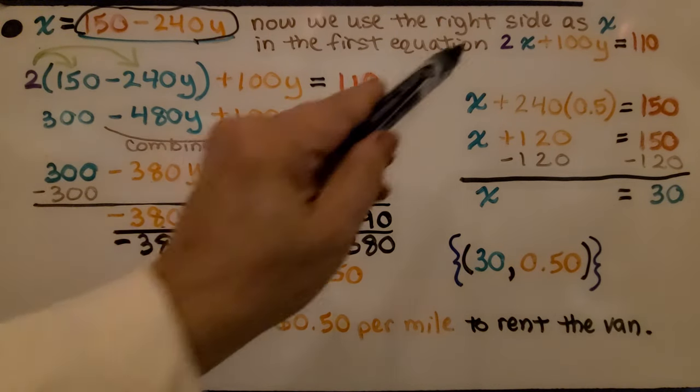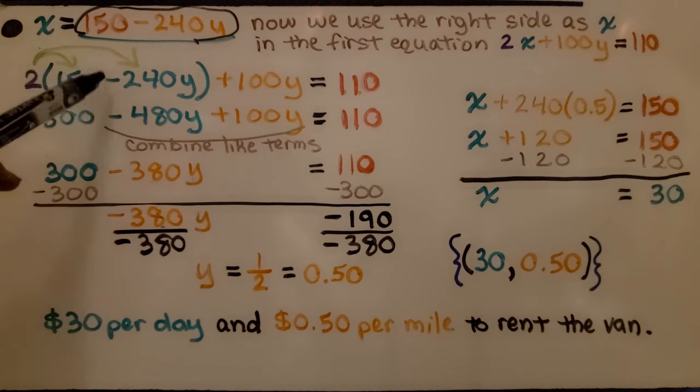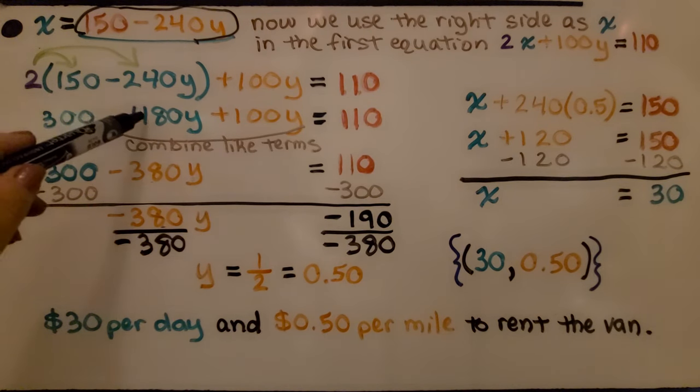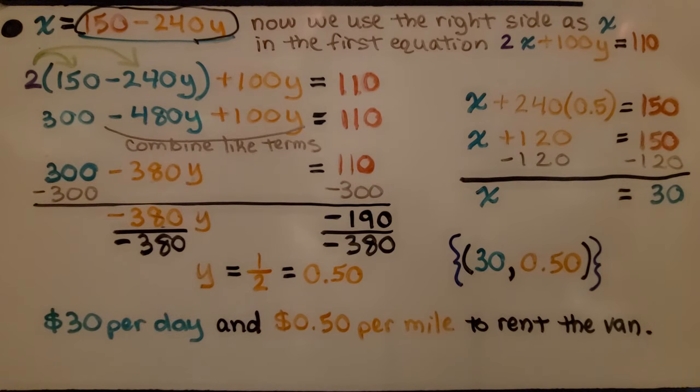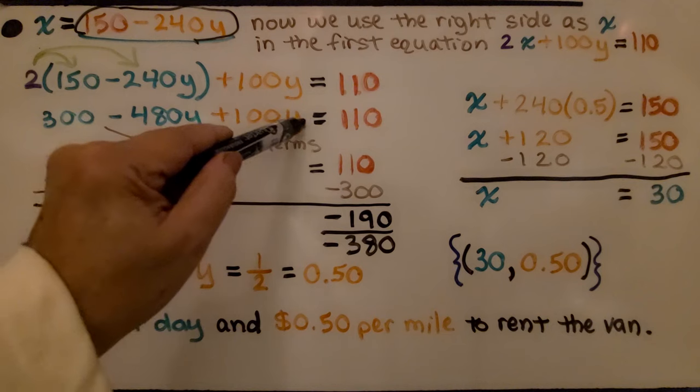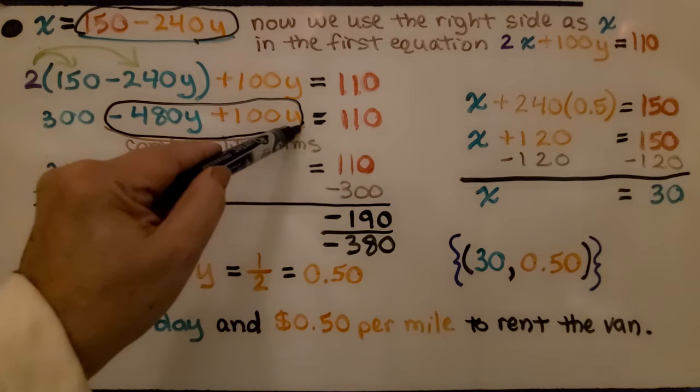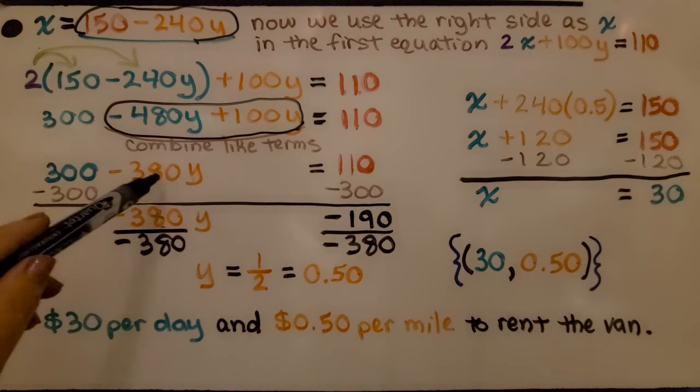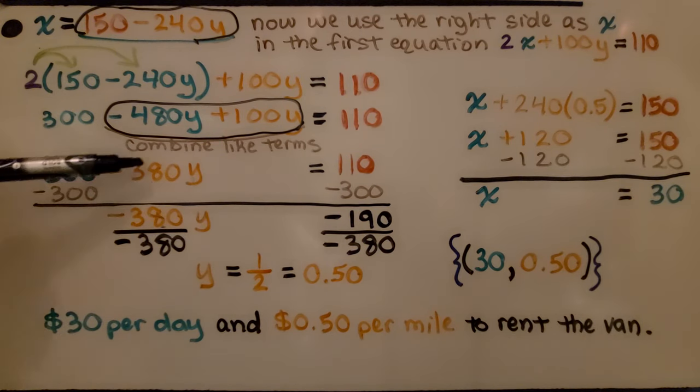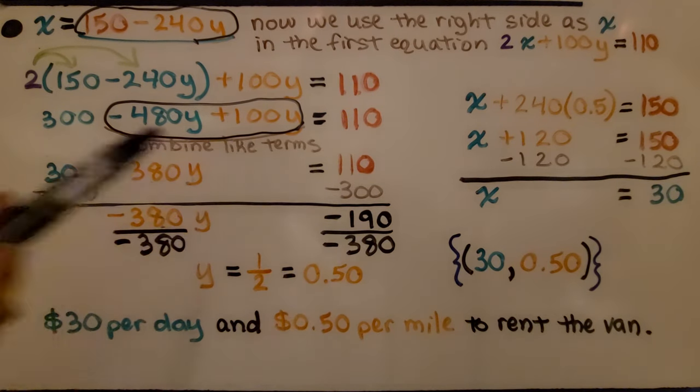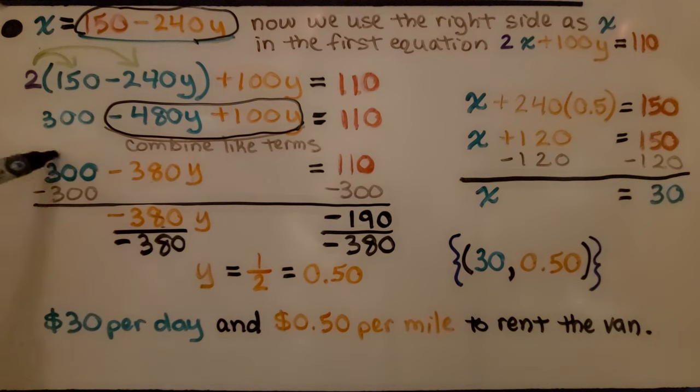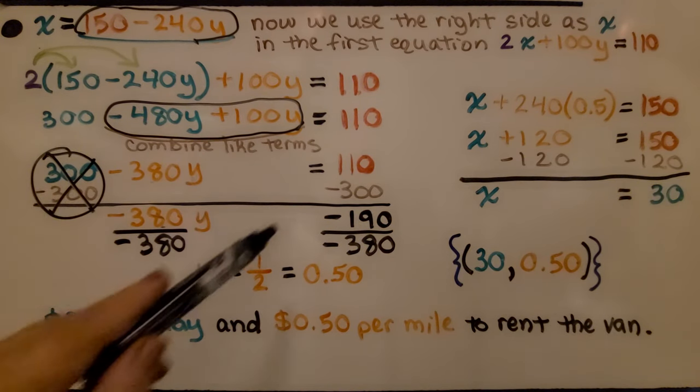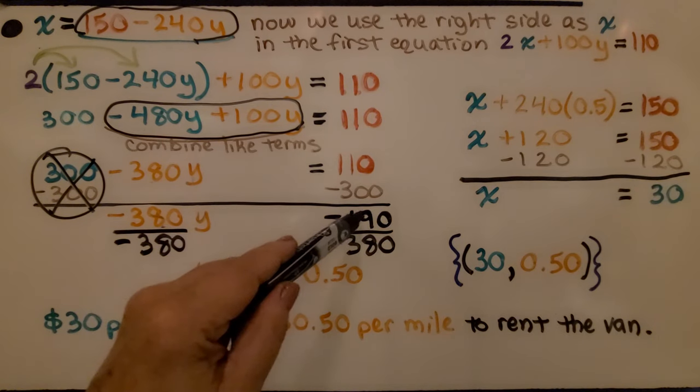We know that x equals 150 minus 240y. Now, we use the right side as x in the first equation. 2x plus 100y equals 110. We're going to substitute it in. So now, instead of 2x, we have 2 times 150 minus 240y. We need to distribute this 2 into the parentheses. We're going to get 300 minus 480y plus 100y equals 110. We can combine these like terms and get negative 380y. Now, we have 300 minus 380y equals 110. We subtract 300 from both sides. That's going to create a zero pair and eliminate it. And when we subtract it on this side, we get negative 190.